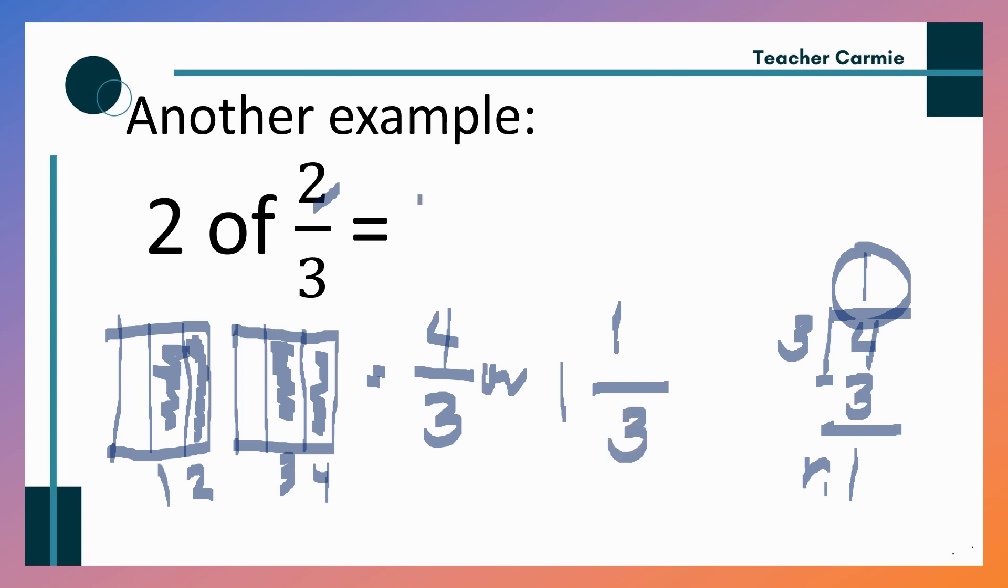then your remainder will become your numerator, and then copy the denominator. If we are going to solve this, 2 of 2 third, so meaning 2 times 2 third. So we just multiply the whole number to the numerator. 2 times 2 third. 2 times 2 equals 4. Then copy the denominator 4 third. Same lang siya, di ba? So na-solve na natin, 1 and 1 third.